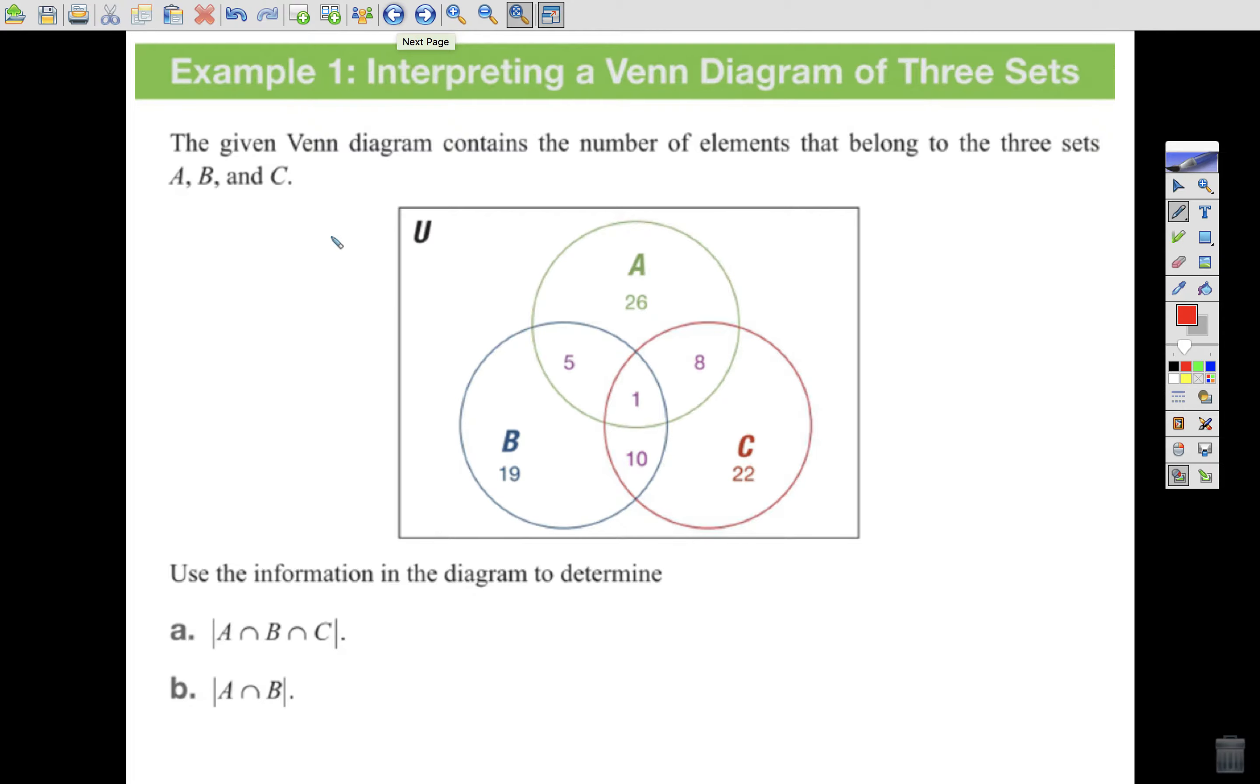So interpreting a Venn diagram of three sets. The given Venn diagram contains the number of elements that belong to the three sets A, B, and C, respectively. Use the information in the diagram to determine the cardinality. Remember, these vertical lines mean cardinality of A intersecting B intersecting C. So we want the intersection of all three sets. Well, that's right here in the middle. Right? We have the intersection of A and B here, A and C here, B and C here. The intersection of all three gives me a cardinality of 1. B says, what is the cardinality of A intersecting B? Well, I have to inspect here. A intersecting B happens in all of this. So there's 5 here and 1 here. That is a cardinality of 6. 5 plus 1 is 6.